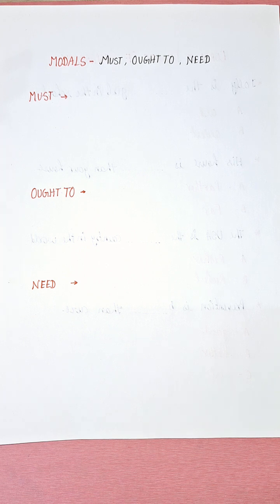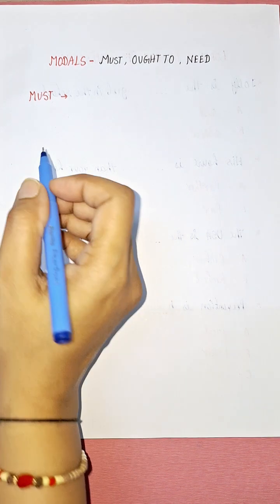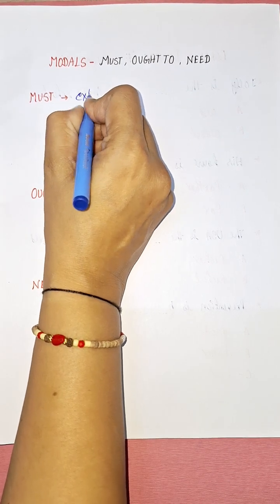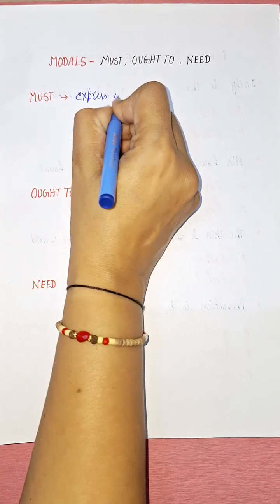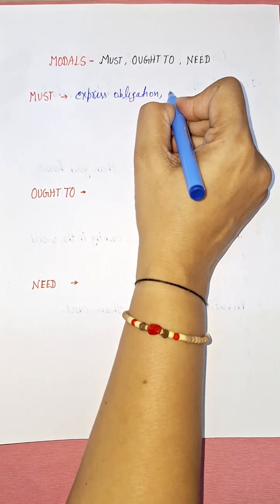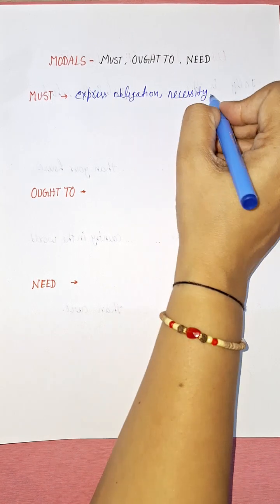Must — the first modal. So, what is the use of this modal verb? Must is used to express obligation and necessity. Strong determination is also expressed using must. So, must is used to express obligation — meaning duty — and determination.